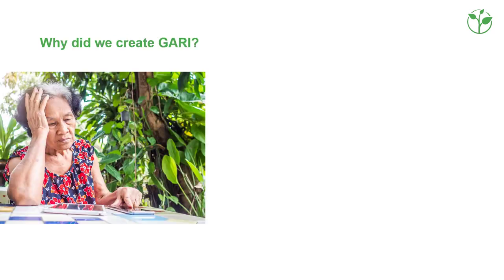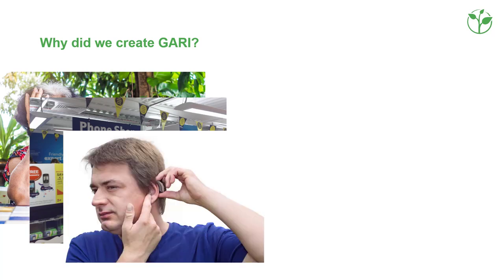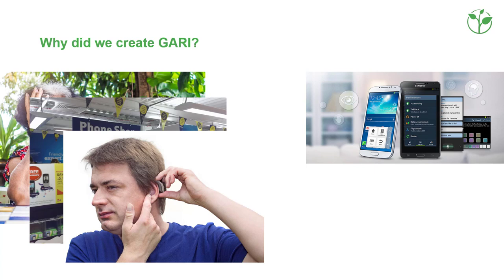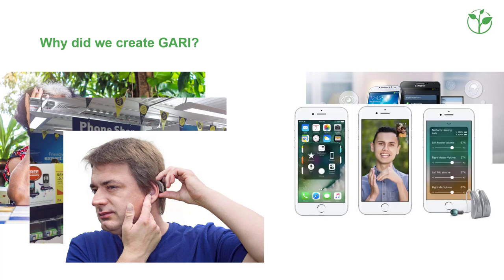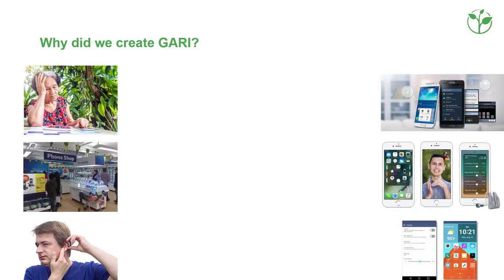Why was GARI created? Consider scenarios such as an older person frustrated with complicated devices, a person with a disability walking into a mobile phone shop, or somebody with a hearing aid looking for a mobile phone. Accessibility features exist in Android and iOS — for example, easy home page and sound balance — but the gap is missing information.